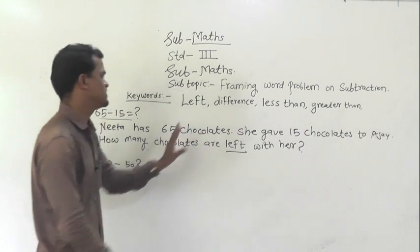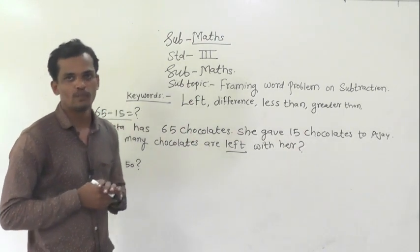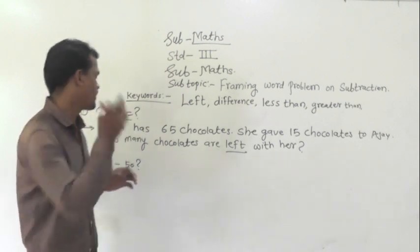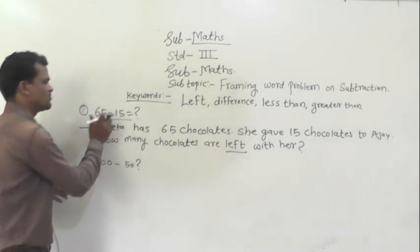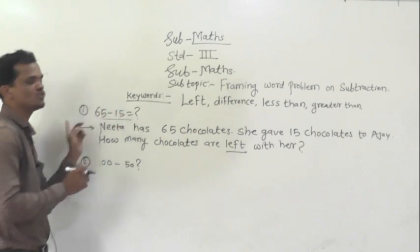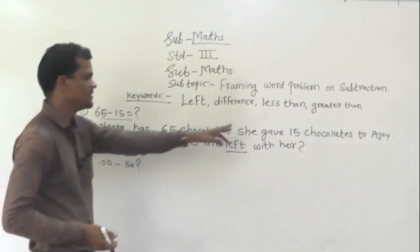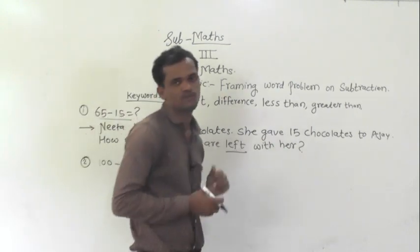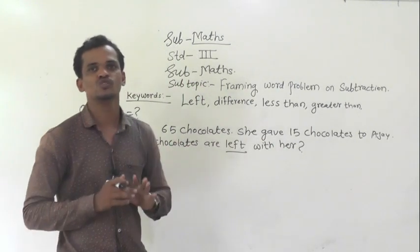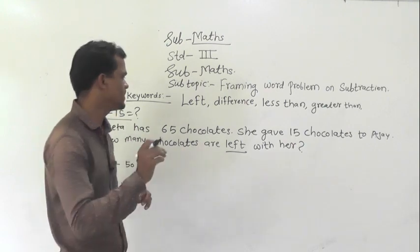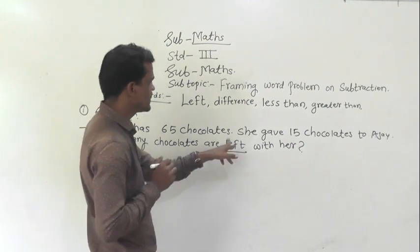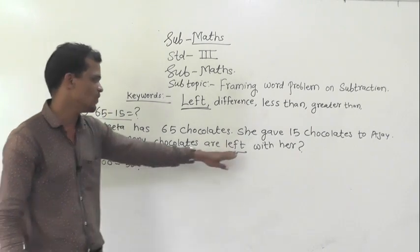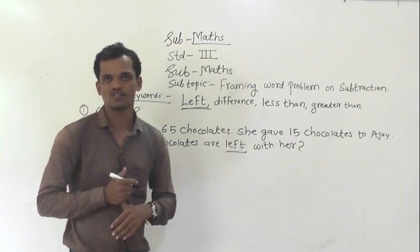Okay, so this is the subtraction word problem. This subtraction word problem we framed on the subtraction fact 65 and 15. These two numbers come in this word problem here, 65 and 15. Like this, you have to frame the word problem. Here, we have used left keyword. This word indicates the subtraction operation.